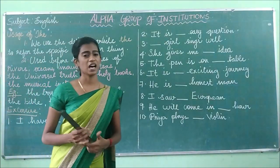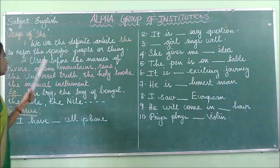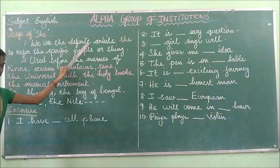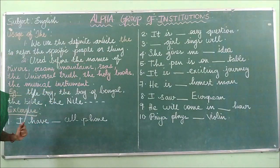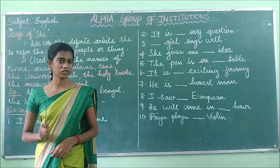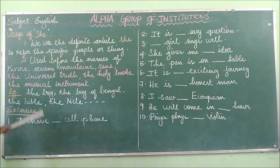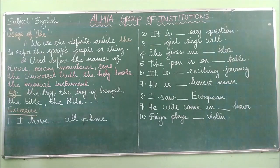For example, if you are referring to the river Ganges, you say 'the Ganges'. So these are the two points for the usage of 'the': we use it to refer to specific people or things, and it is used before the names of rivers, oceans, mountains, seas, universal truths, holy books, and musical instruments.